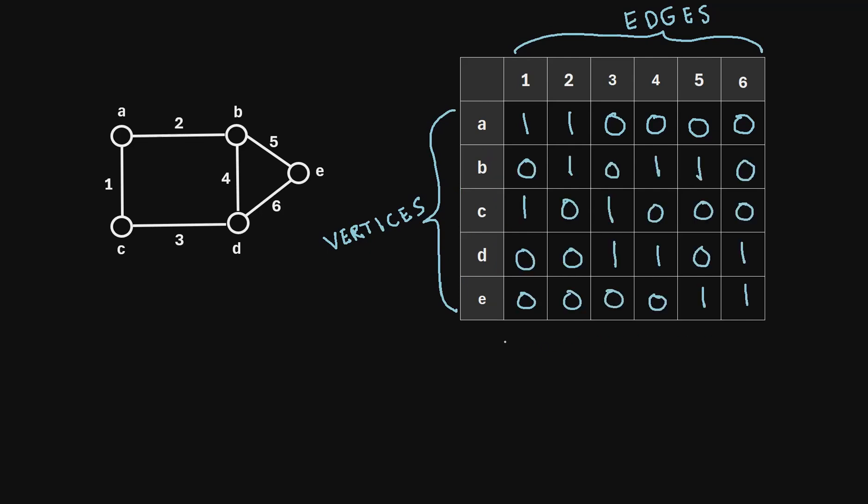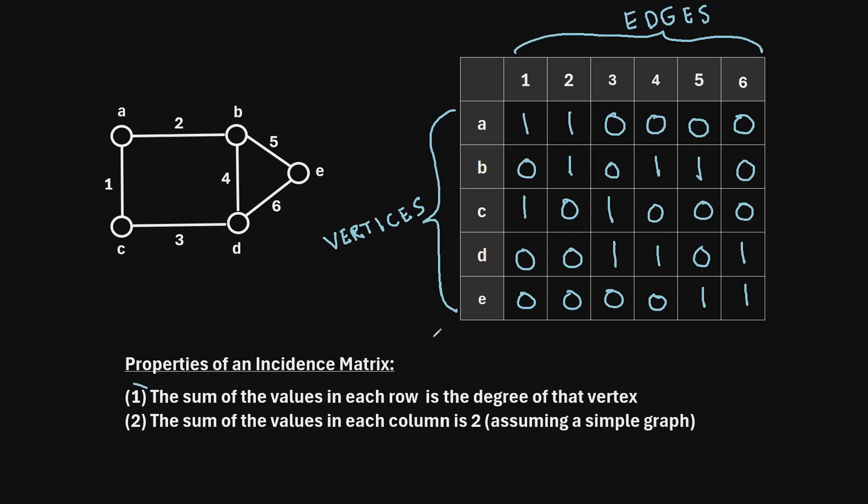So here is what the incidence matrix looks like when we fill out all of the remaining rows. Now, an incidence matrix has a couple interesting properties.